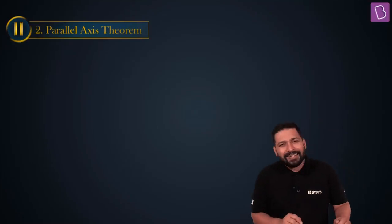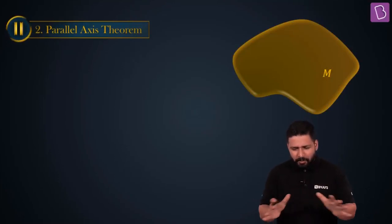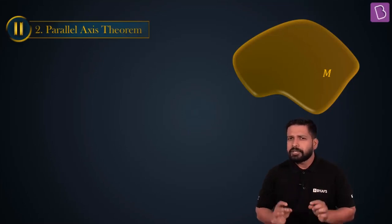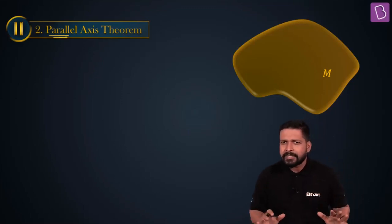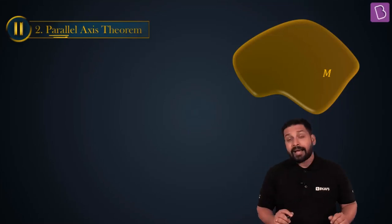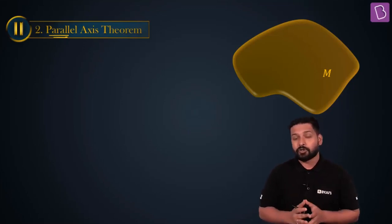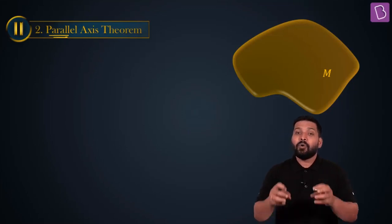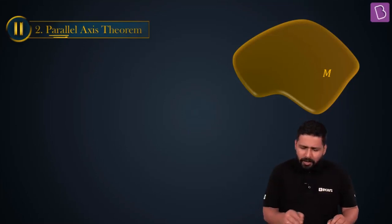So what is the parallel axis theorem? Consider a body like this. The general idea is that you have to find the moment of inertia about an axis, and from the name itself you get a hint — it has something to do with parallel lines. This is a theorem which is not new to you; you probably did it in school, but understanding how to apply it and what it means is very important.